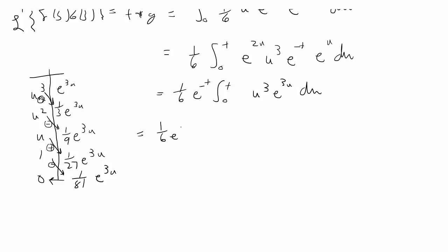So we're going to get 1/6 e^(-t) times, and then we just go diagonally to fill in the placements. So we have u^3 times 1/3 e^(3u) minus 3u^2 times 1/9 e^(3u). Then plus 6u times 1/27 e^(3u), then minus 6 times 1/81 e^(3u). And that's all from 0 to t. So I'm going to simplify that. I always make stupid mistakes when I'm redoing a problem, so I'm sorry for that.